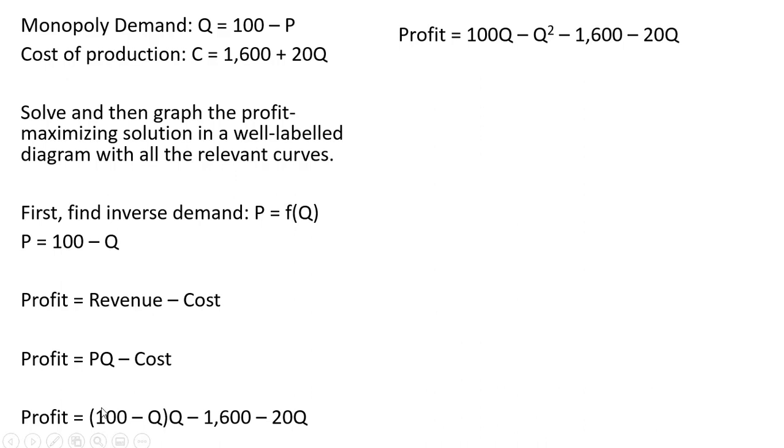Simplifying some things here. This Q times 100, and then this Q times a negative Q. We're left with 100Q - Q². And now I'm going to take 100Q and subtract from it 20Q, leaving us with 80Q.